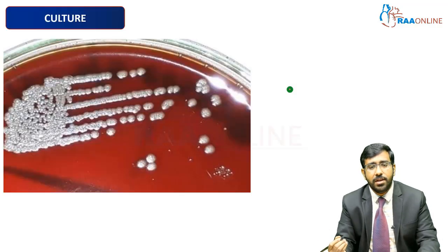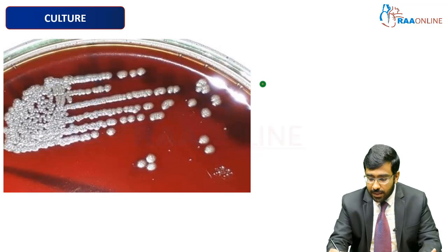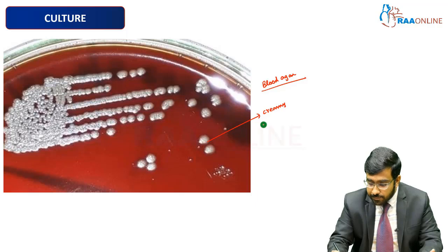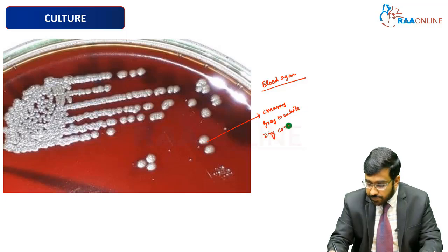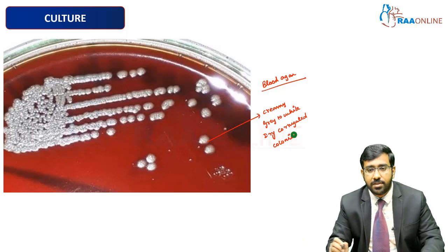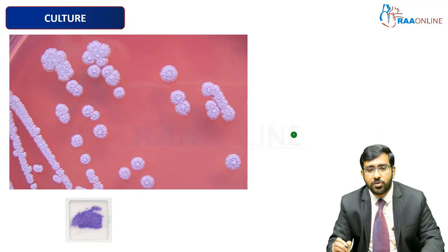On blood agar, we are able to see creamy grey-white, dry, corrugated colonies. These are the findings on blood agar. Let us now look at the findings on the next agar.